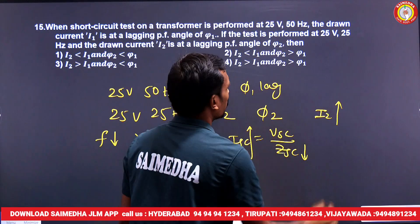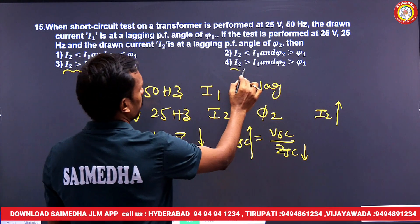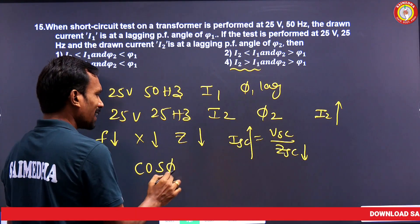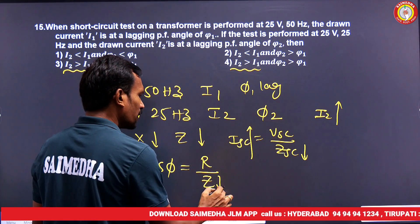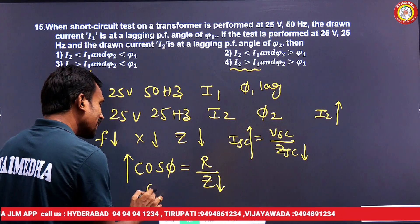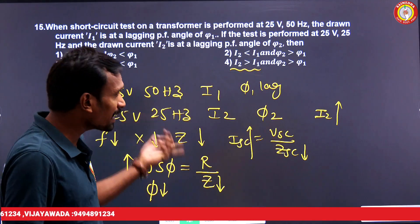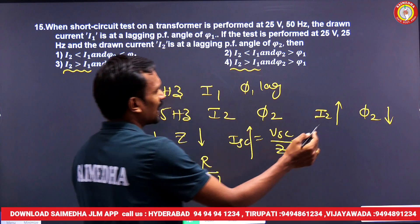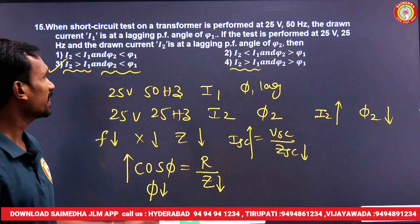So when frequency is reduced, I2 will be greater than I1. Also, power factor = R/Z. When Z reduces, the power factor increases. Power factor increasing means the power factor angle reduces, so φ2 < φ1. This is the answer — a tricky but important concept.